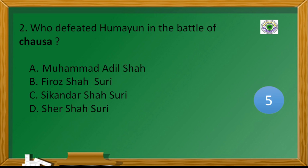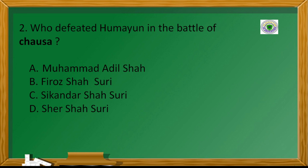Who defeated Humayun in the battle of Chausa? Answer D: Sher Shah Suri.